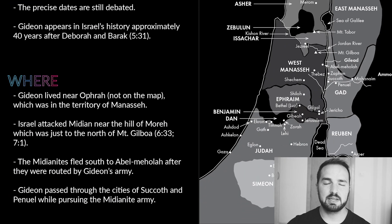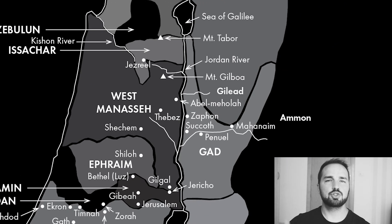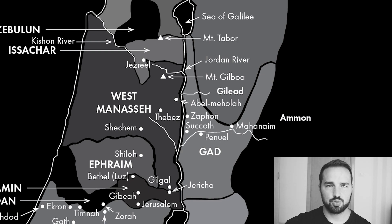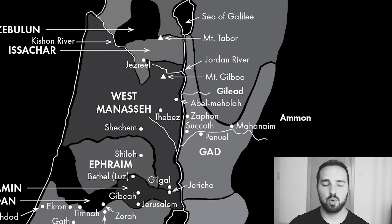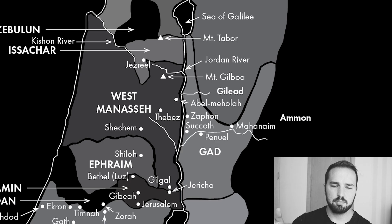Let's take a look at the map and try to place some of the key locations in this chapter. We know that Gideon was from a place called Ophrah, which was in the territory of Manasseh. The Israelites attacked the Midianite army just to the north of Mount Gilboa, and that one is on the map. Moving a little bit to the southeast, as the Midianites retreated, they went through a place called Abel-Mahola, and then further southeast, crossed the Jordan River. Gideon, when pursuing them, passed through Succoth and Penuel.